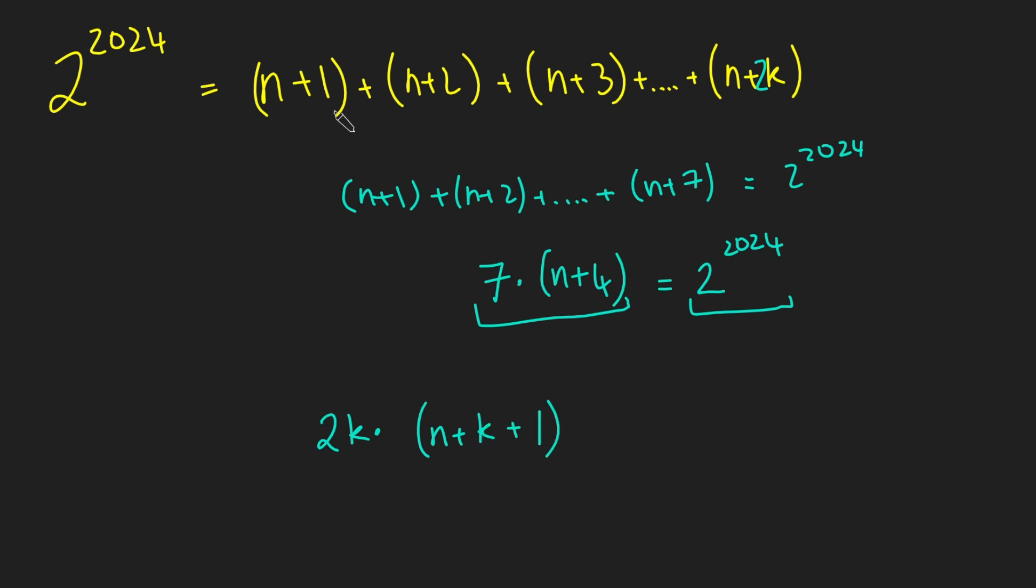Because it's n plus 1 plus n plus 2k, which is going to give us 2n plus 2k plus 1 over 2. So, oh sorry, that's supposed to be a half there. So we get that equals 2 to the 2024.